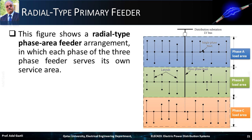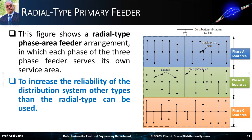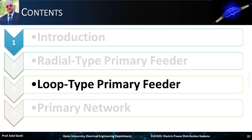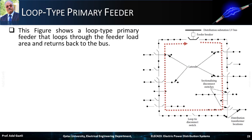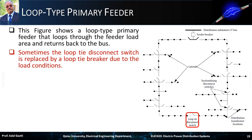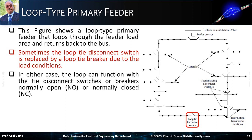To increase the reliability of the distribution system, other types than the radial type can be used. For instance, the loop type primary feeder is more reliable than the previous radial types. This figure shows a loop type primary feeder that loops through the feeder load area and returns back to the bus. Sometimes the loop tie disconnect switch is replaced by a loop tie breaker due to load conditions. In either case, the loop can function with the tie disconnect switches or breakers normally open (NO) or normally closed (NC).